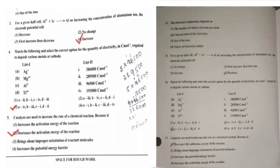As you can see, question 4 says 'Match the following and select the correct option for the quantity of electricity.' This is the 4th question in the A1 set. The same question appears as question 16 in another set — same question, same options, just a different question number. So for every set, the question numbers will be different.